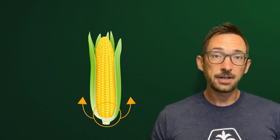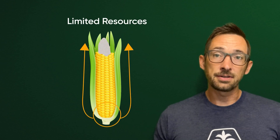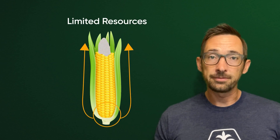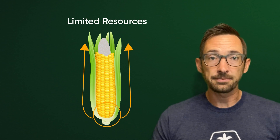In the eight weeks from pollination to maturity, kernels are competing for food and water. Kernels at the base of the ear have an advantage, so limited resources during grain fill could prevent kernels at the tip from fully developing.